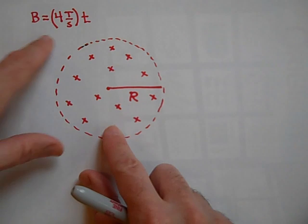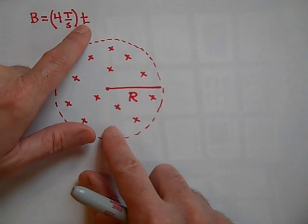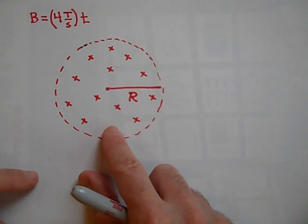It's changing at a rate of 4 Teslas per second, and this equation will tell you if you put in a t what the field is there. So at t equals zero it's zero, but at t equals one second it's 4 Teslas, and so on.